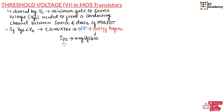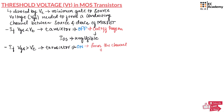If Vgs is greater than threshold voltage, then the transistor will be on and it will form a conducting channel. This region of operation is known as the conduction region or active region, and the drain-to-source current increases. Remember: if Vgs is less than Vt the transistor is off; if Vgs is greater than Vt the transistor is on.